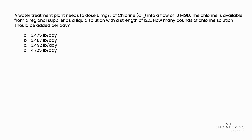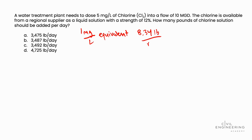To tackle this problem, we need to know — and this is going to be something you're required to know coming into the PE exam — that one milligram per liter is equivalent to 8.34 pounds per million gallons. We'll write that MGAL. That's just one of those basic concepts you need to know when you walk into your water resources PE exam.